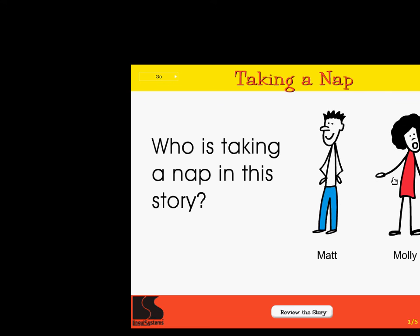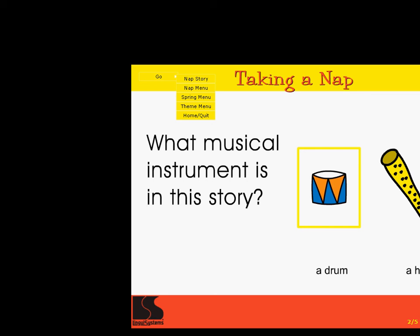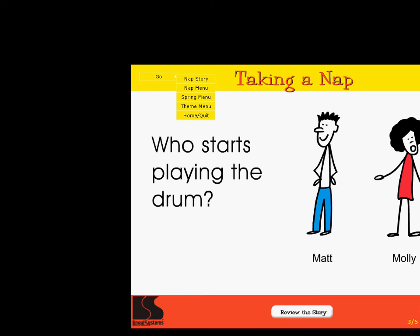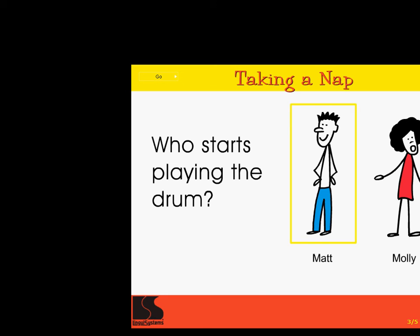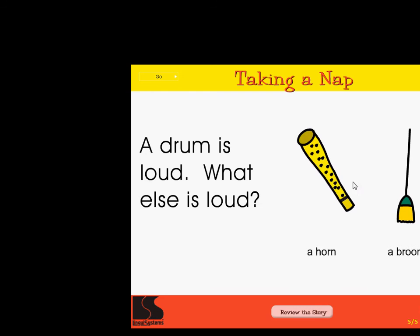Who is taking a nap in this story? Matt. Molly. Excellent. What musical instrument is in this story? A drum. A horn. Correct. Who starts playing the drum? Matt. Super. What does Molly put on her ears? A hat. Earmuffs. Right on. A drum is loud. What else is loud? A horn. A broom. Wow.